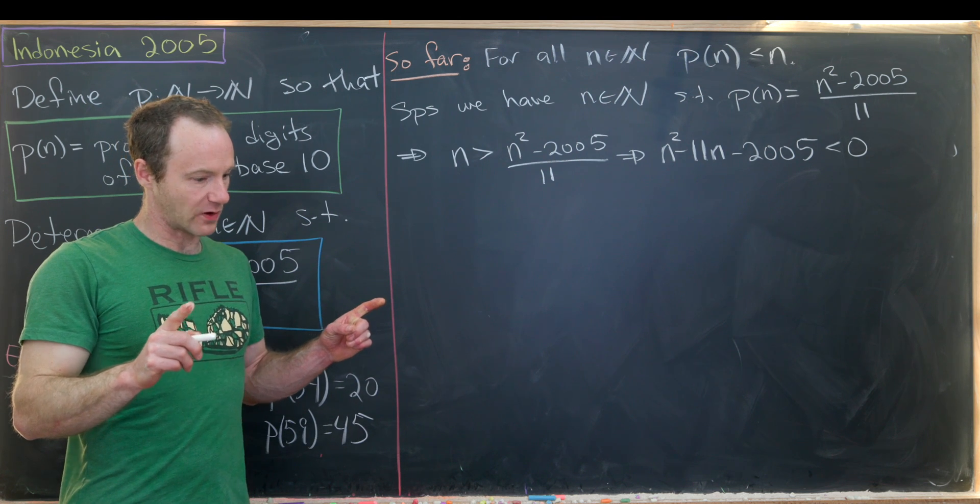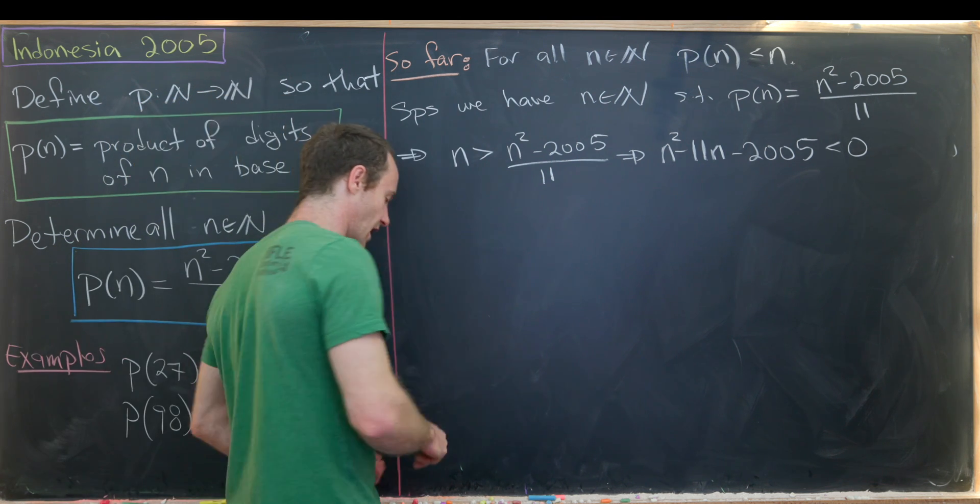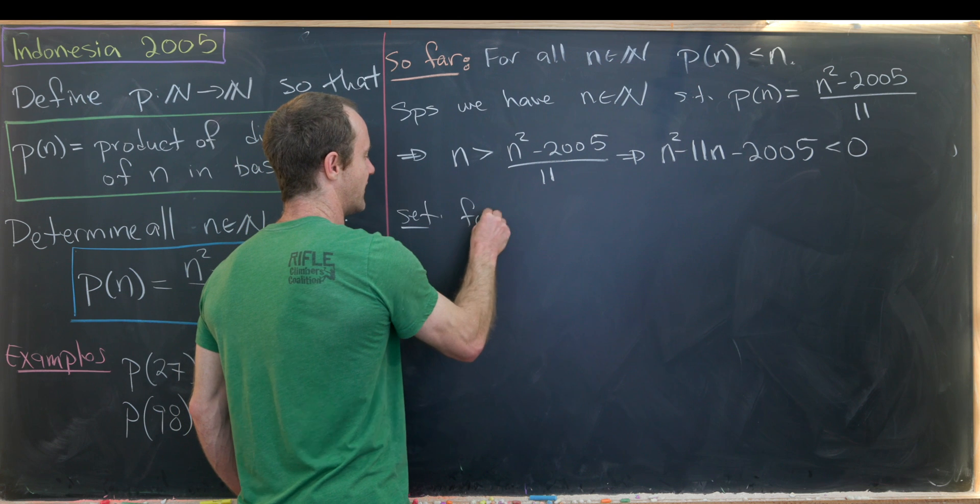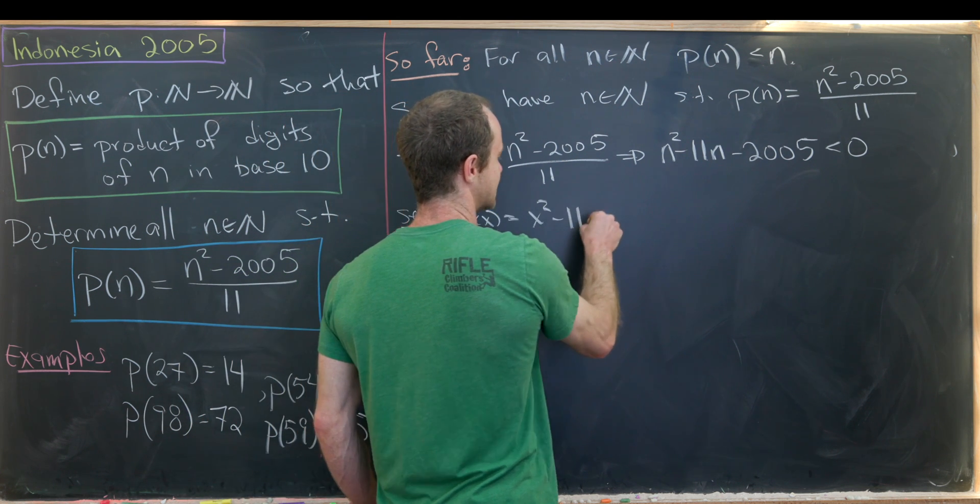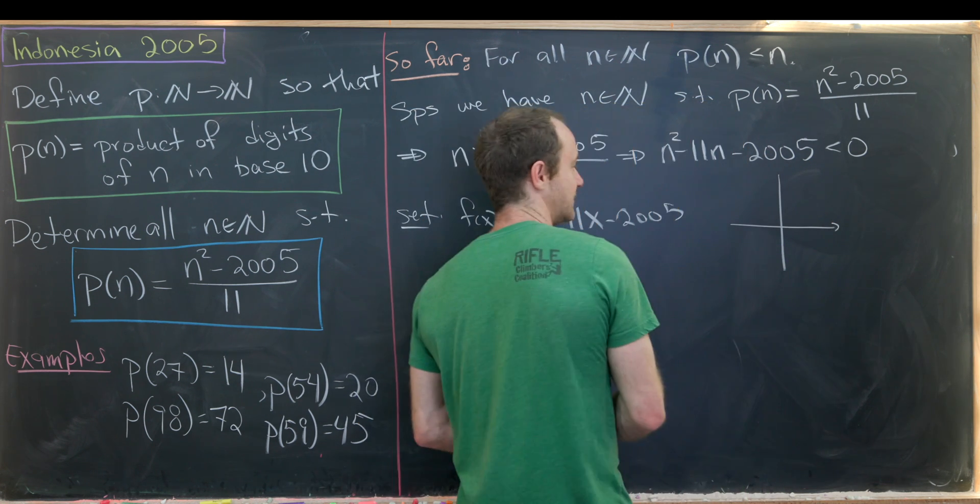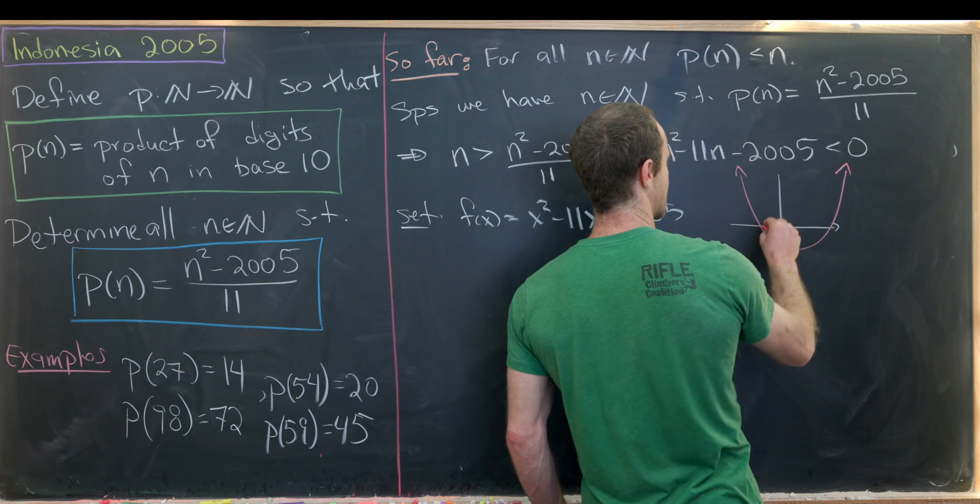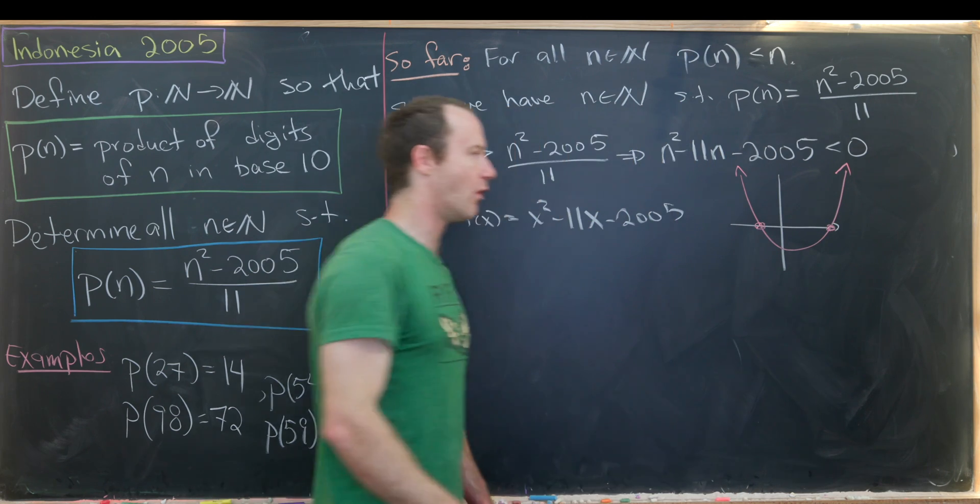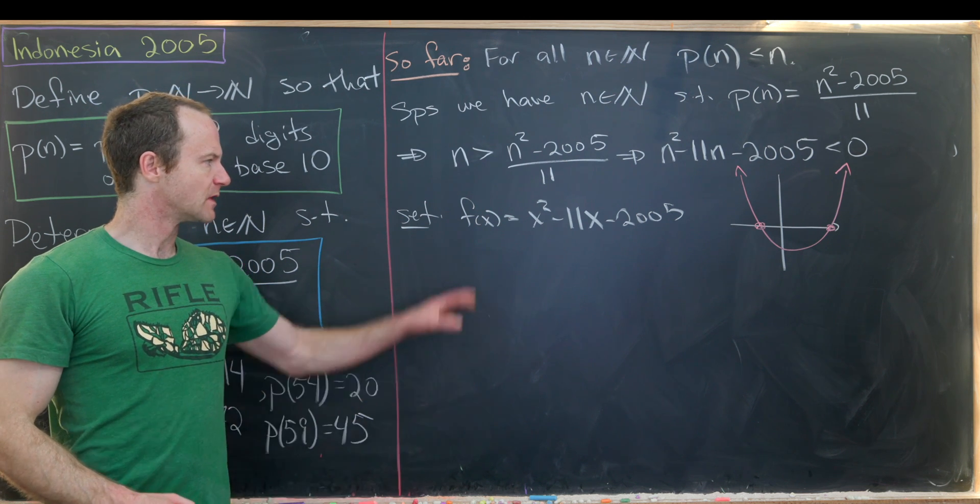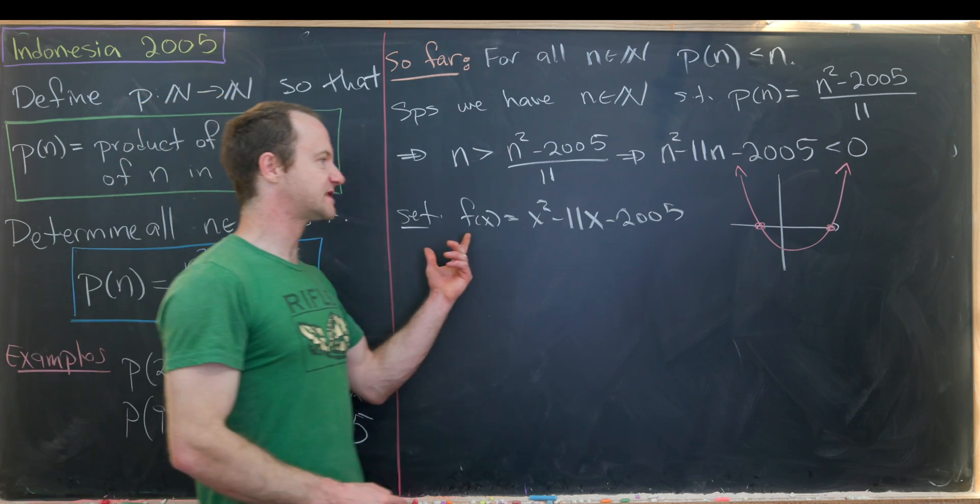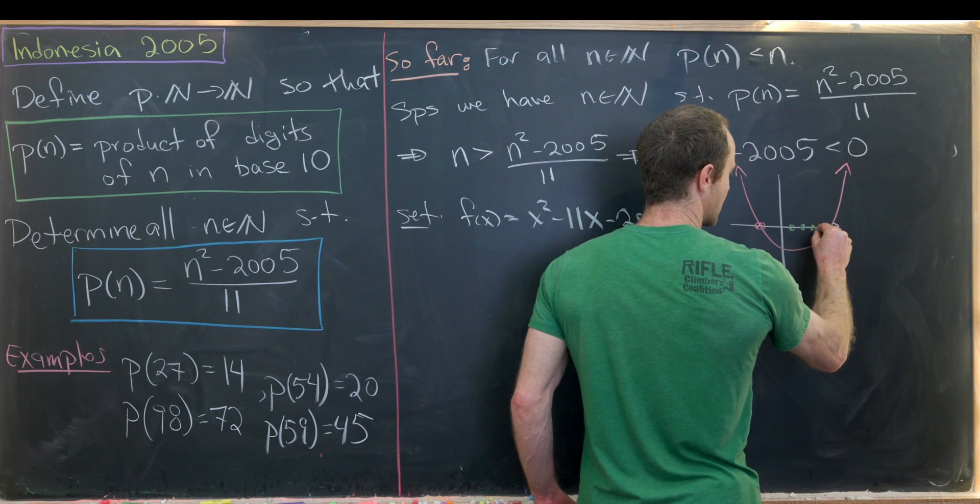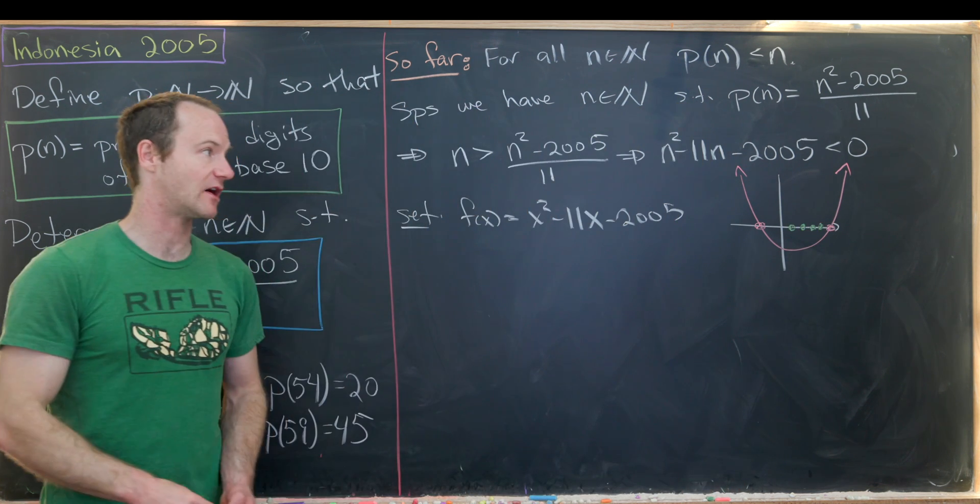But that only happens for a finite set of numbers and we know that because this is an upward facing parabola. Like for example if we considered the function maybe we'll call it f of x equal to x squared minus 11x minus 2005 we would see that the graph of this function maybe has the following shape. So it looks something like this. And you can find these zeros if you'd want to although we're not going to find them strictly because we'll just do an estimate which will be good enough for our purposes. Okay so we've got this function set up and notice that we want to find the points where this function is negative. So we're looking for all the natural numbers that are in this region right here because those correspond to negative values of this function.